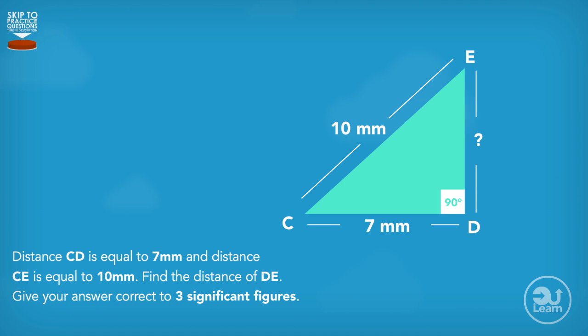Another example can be, distance CD is equal to 7mm and distance CE is equal to 10mm. Find the distance of DE. Give your answer correct to three significant figures.